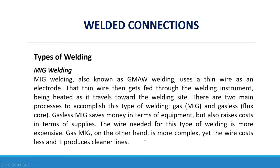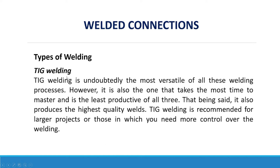Gas MIG, on the other hand, is more complex, yet the wire costs less and it produces cleaner lines. TIG welding is undoubtedly the most versatile of all these welding processes. However, it is also the one that takes the most time to master and is the least productive of the three. That being said, it also produces the highest quality welds. TIG welding is recommended for larger projects or those in which you need more control over the welding.